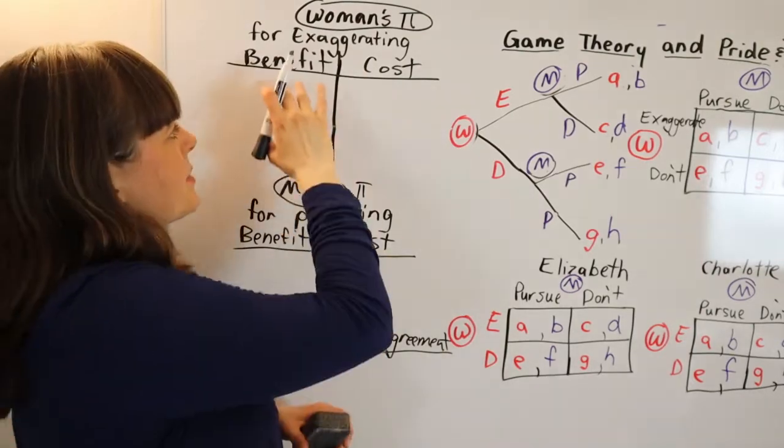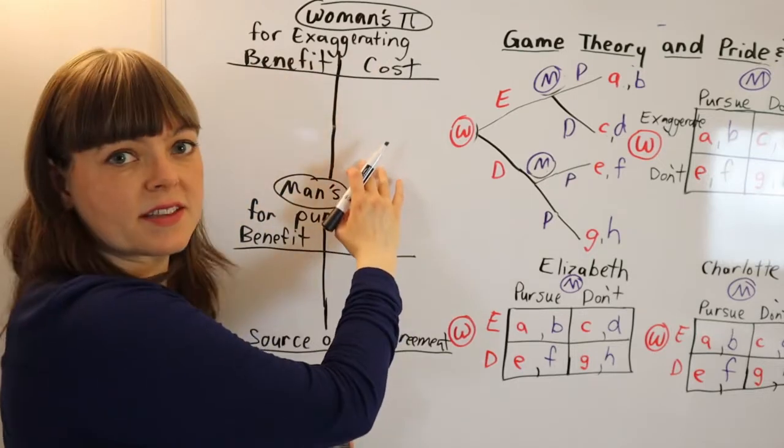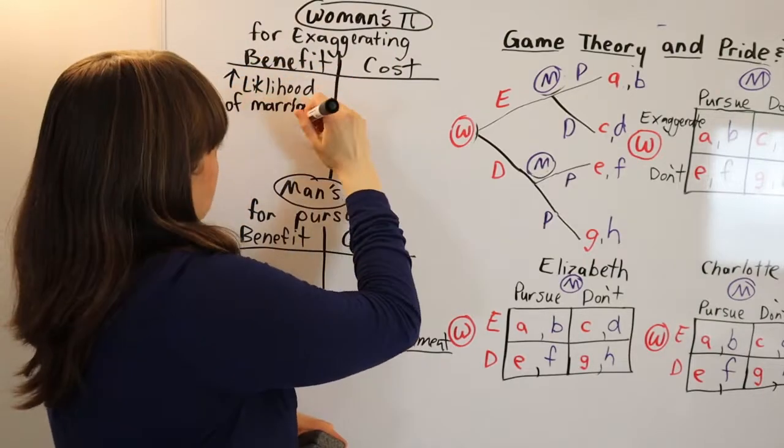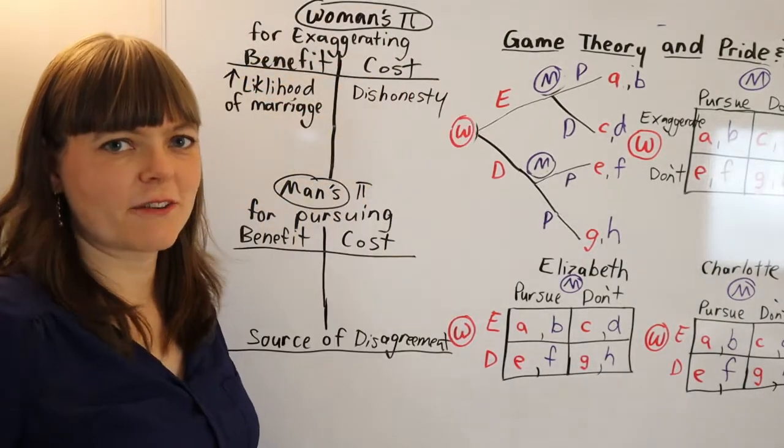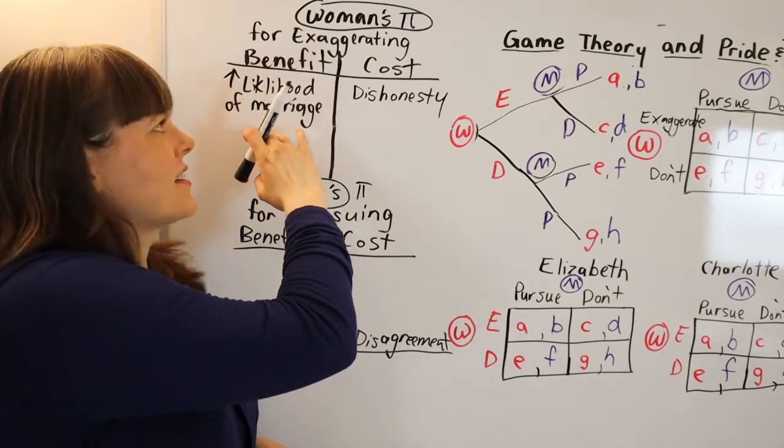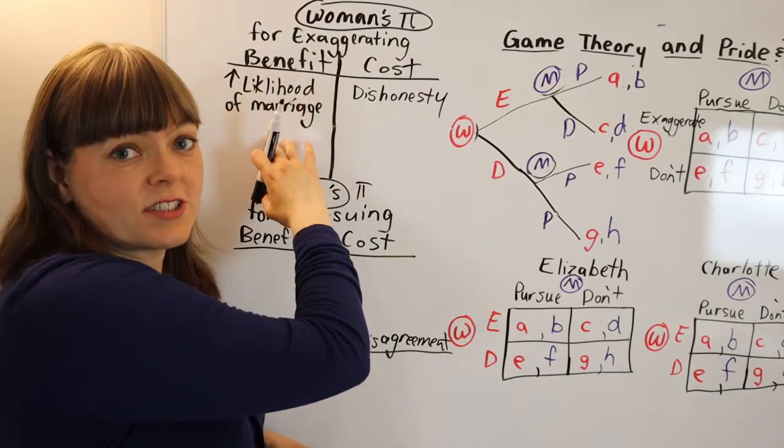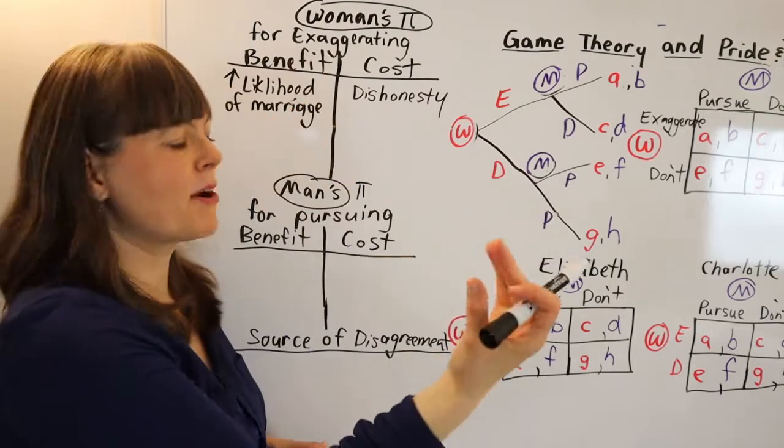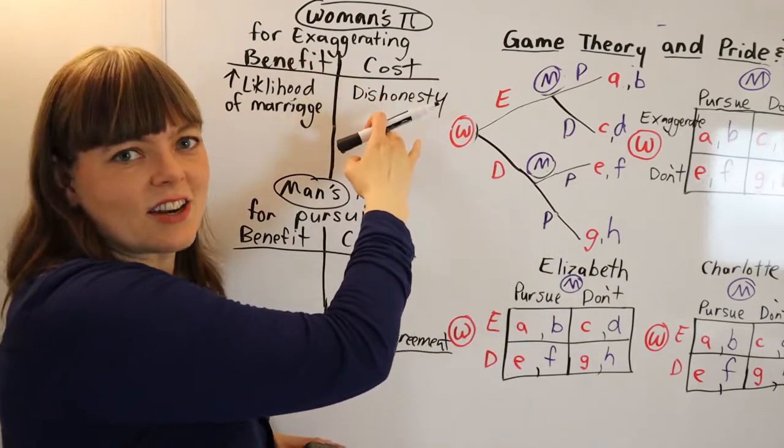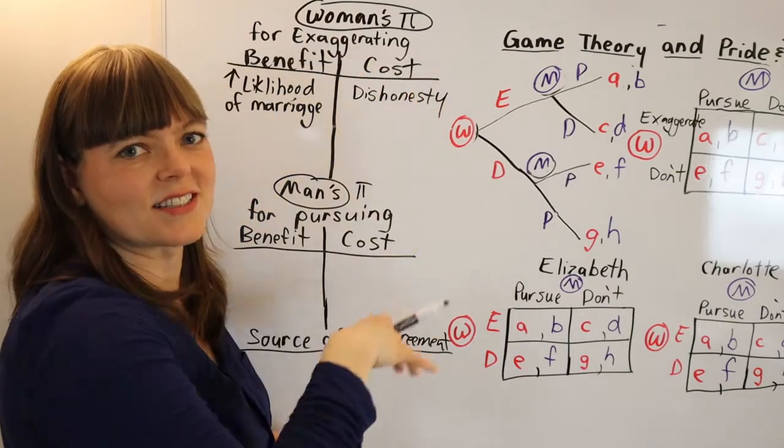And you could imagine Elizabeth and Charlotte brainstorming these together. So what's the benefit of exaggerating? I just put down the first benefit and cost that came to mind. Charlotte's arguing that exaggerating your interest is going to increase your likelihood of marriage. Elizabeth is arguing essentially that exaggerating your interest, the cost of that is the dishonesty.